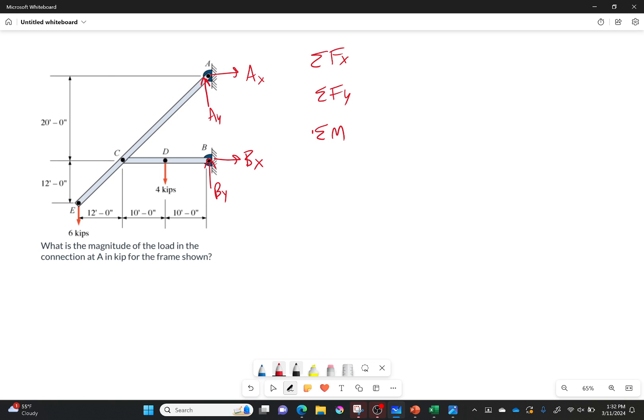Let's do sum of the forces in the X in the first place. Now I only have two forces that are in the X direction, this one and this one. So the force in the X direction is going to be equal to Ax plus Bx, and that has to be equal to 0. And so that tells me that Ax is going to be equal to negative Bx. So if I find one of those, I know the other one.